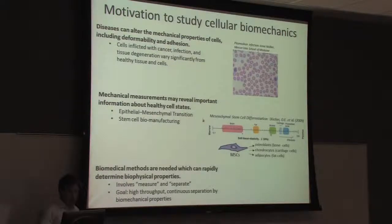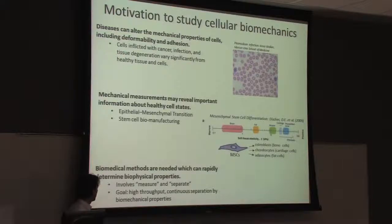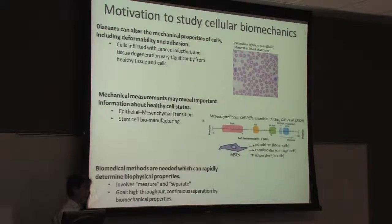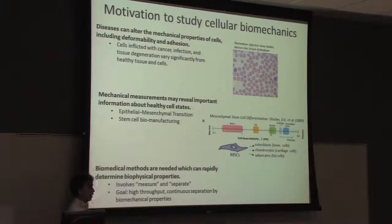So we're trying to come up with some biomechanical methods to determine the biophysical properties of cells. This involves both measuring mechanical properties and also potentially separating by those properties, akin to a flow cytometer.